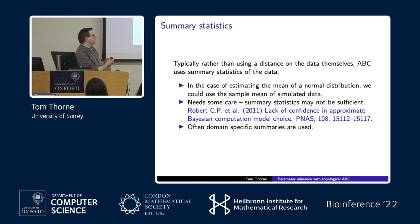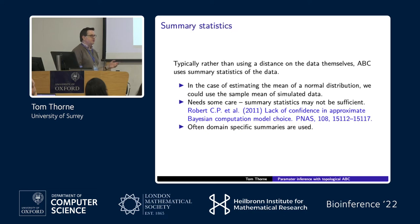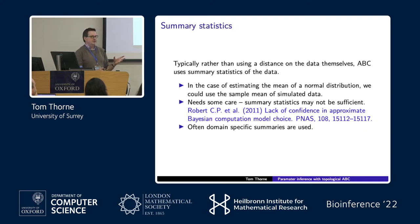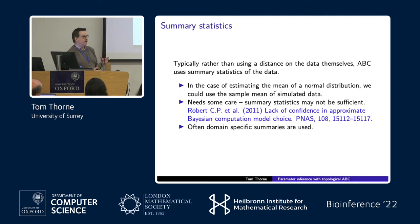There's a very nice paper about this by Christian Robert about lack of confidence in approximate Bayesian computation, specifically for model selection, but it's also a problem for parameter inference. Quite often people use domain-specific summaries based on their expertise. It's very difficult in general to determine what counts as a sufficient statistic for a particular model, especially when working with complex biological models.